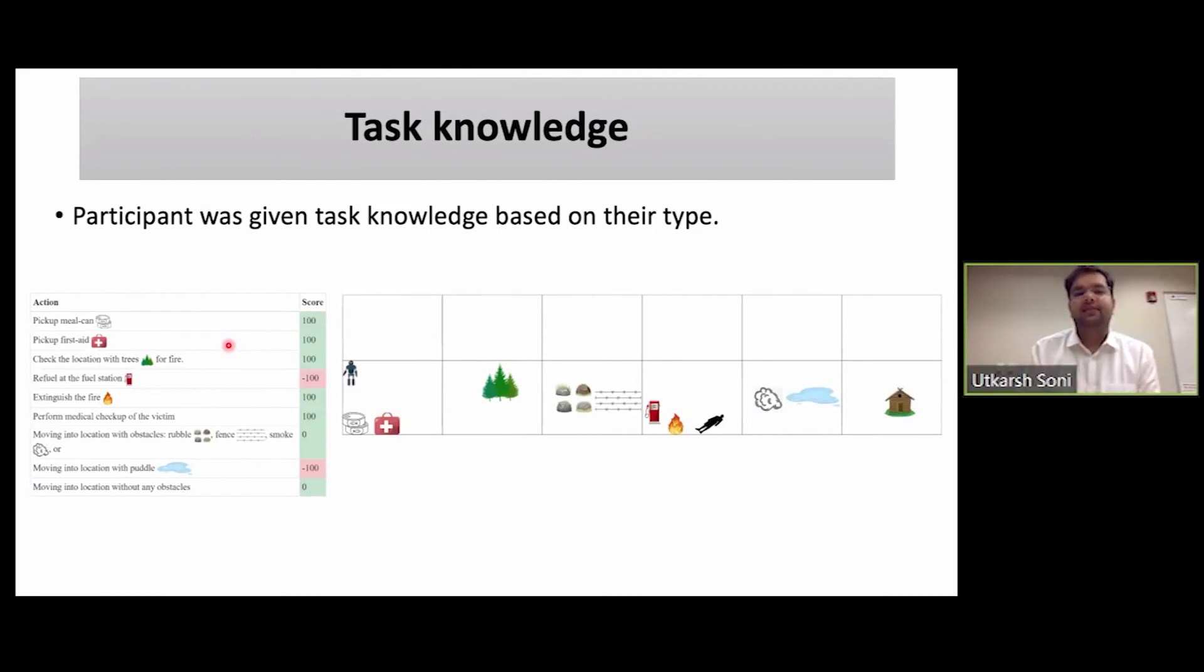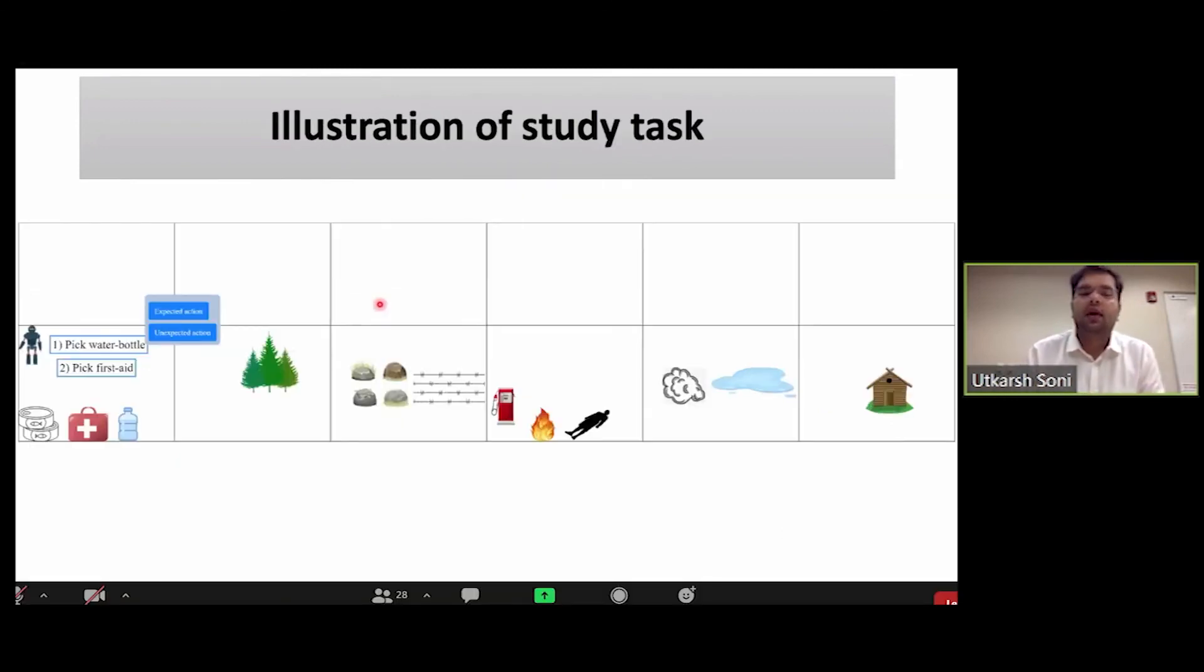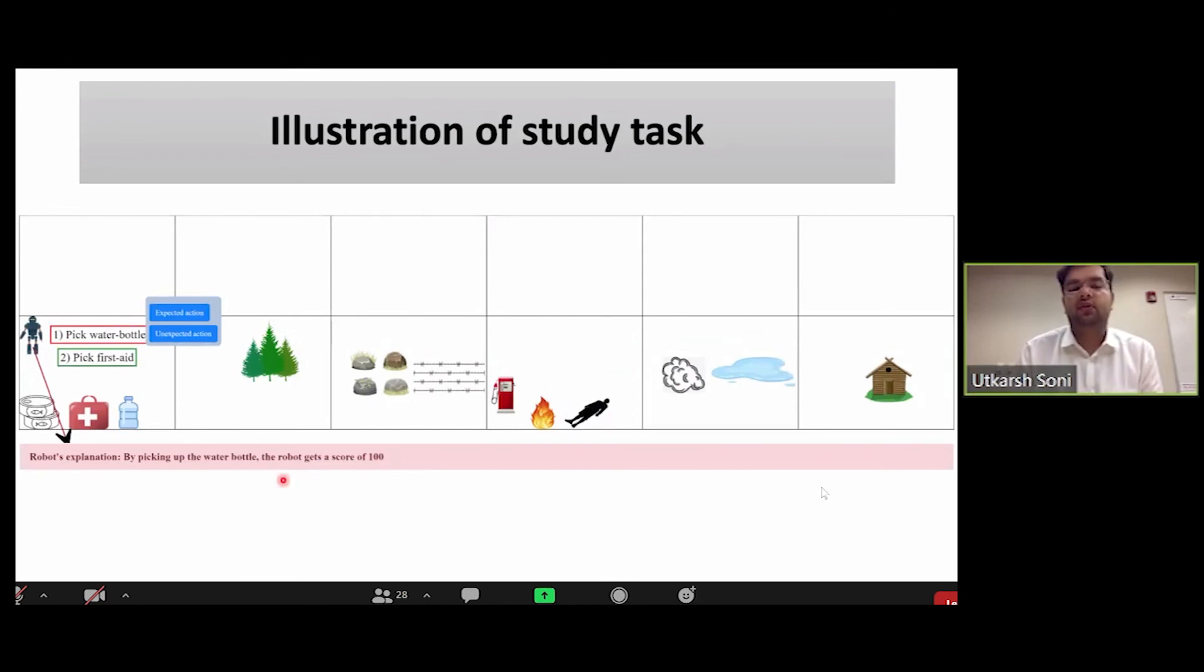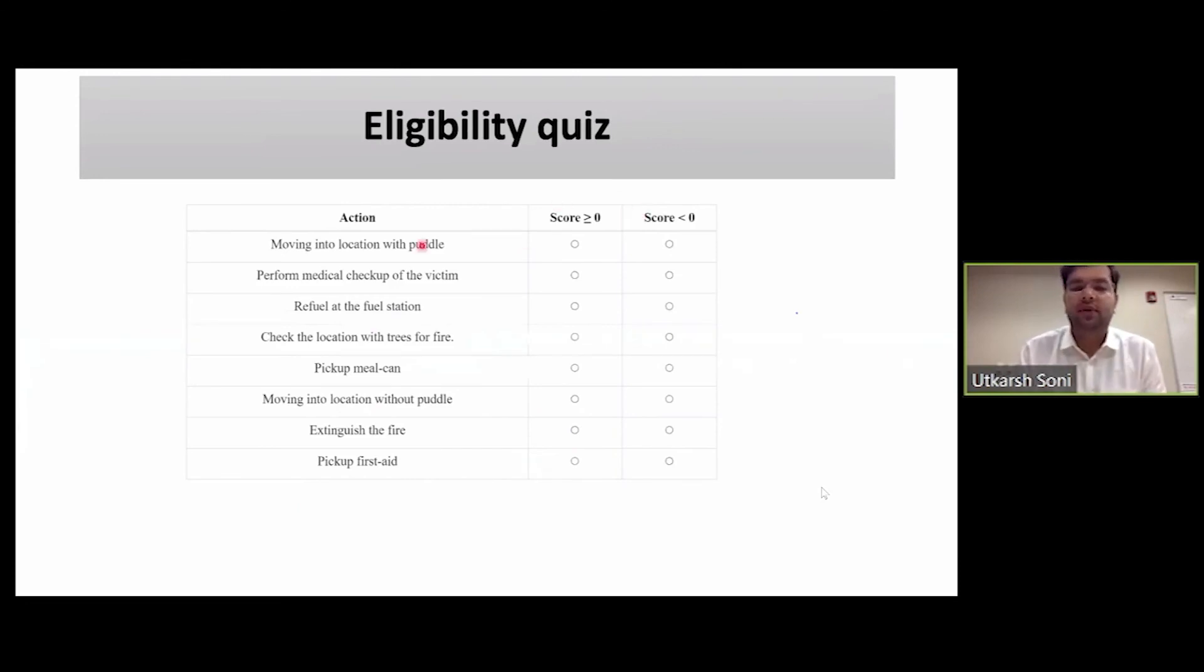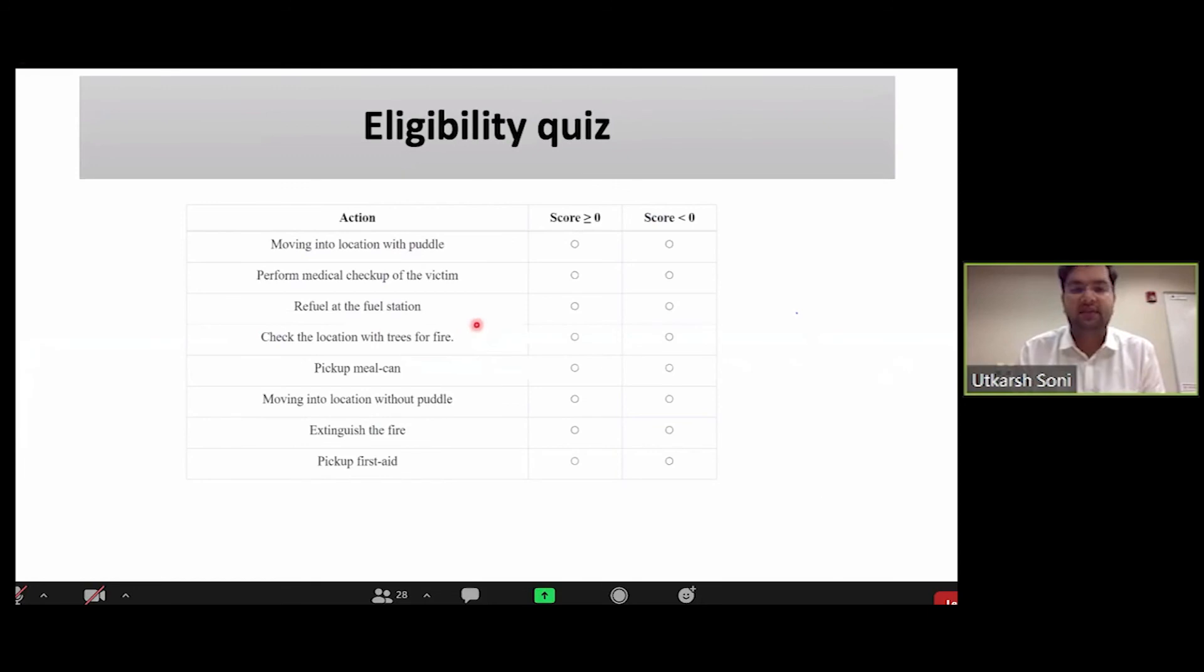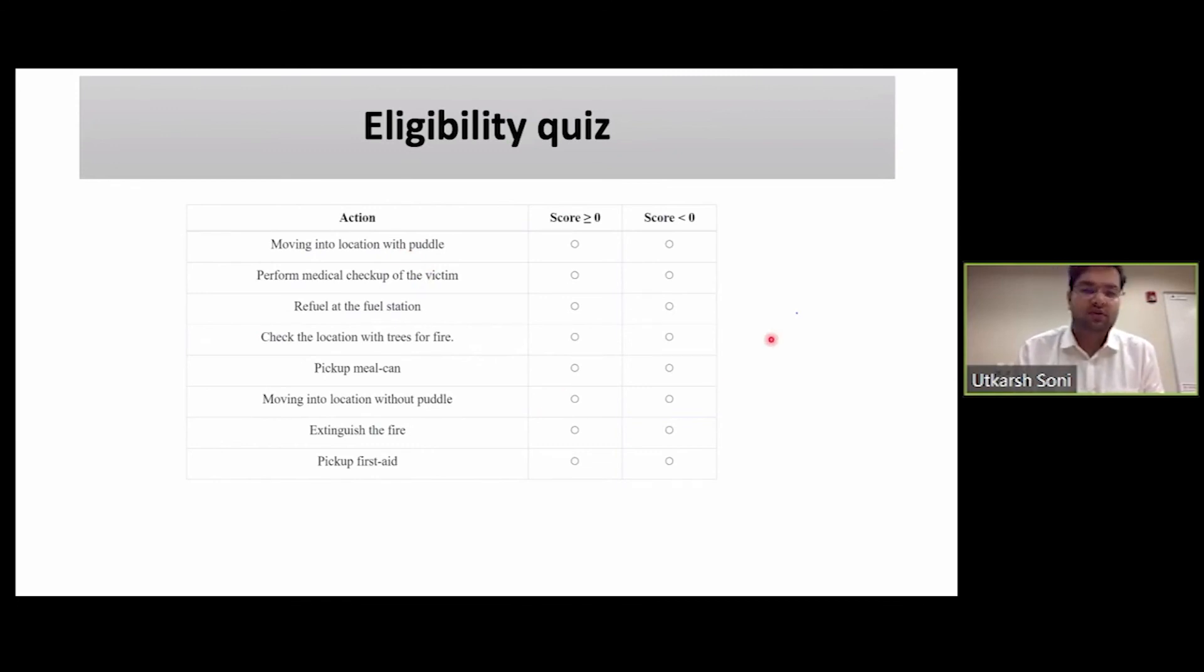The study begins by giving the participant knowledge about the task. The knowledge was catered exactly to their type. We gave them the kind of knowledge their type is supposed to have about the task. Then we illustrated the study task that they had to perform, which was to mark actions as expected or unexpected. At each step, they'll be given more actions, one step at a time. They might also be given some explanations by the robot, and they were told to update their model. After this, we took an eligibility quiz where we checked whether or not they remembered the task knowledge, because that was necessary to evaluate the robot's plan.